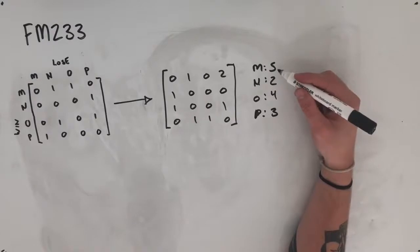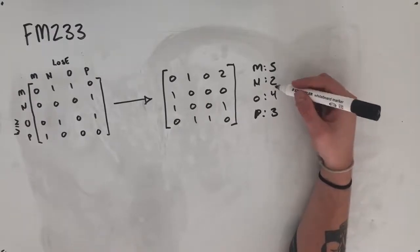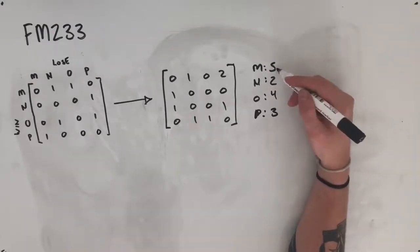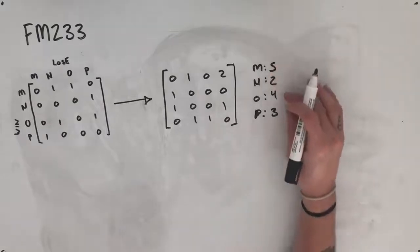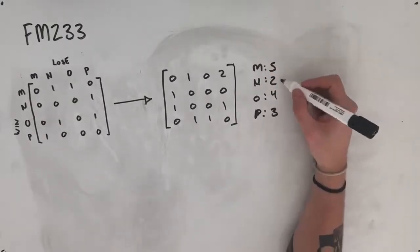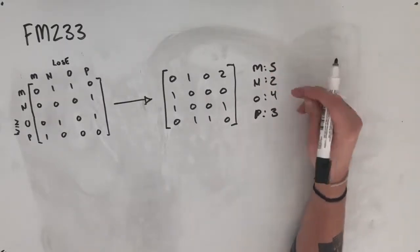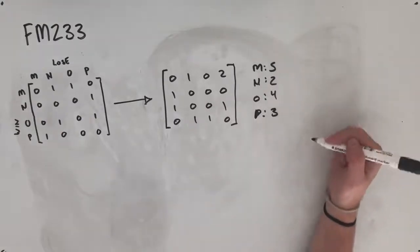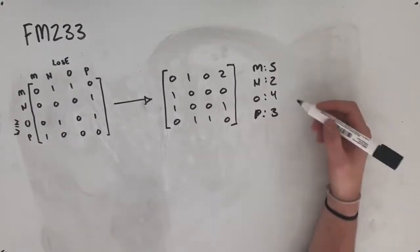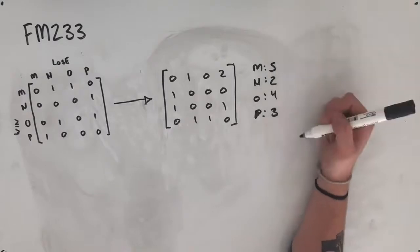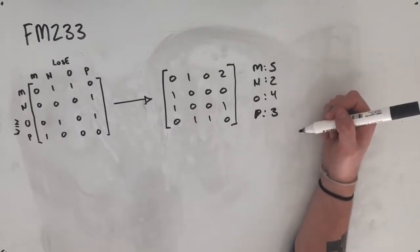So either M has to lose to somebody or N has to lose to somebody. So if M loses to somebody, maybe he gets brought down to these guys' score. But if N loses to somebody, maybe these guys get brought up. And of course, if N loses as well, then M could lose some of its two-step dominance.